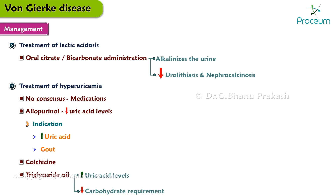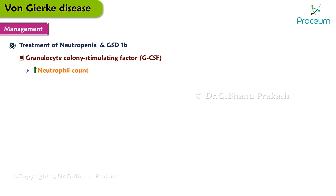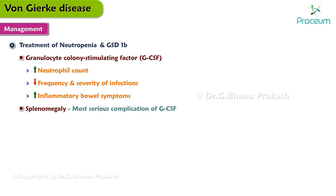Patients with GSD-1B and neutropenia should be treated with granulocyte colony-stimulating factor, or GCSF. Treatment with GCSF increases neutrophil count, decreases the frequency and severity of infections, and improves inflammatory bowel symptoms. Splenomegaly is the most serious complication of GCSF. This concludes our discussion of Von Gierke disease, glycogen storage disease 1. I hope you found this video interesting and informative. Thank you so much for watching, and have a wonderful rest of your day.